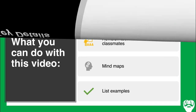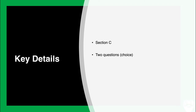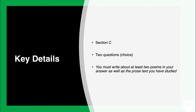Some key details you need to know before we begin. What I'm going to be talking about today relates principally to Section C of the Love Through the Ages examination paper. In this, you have a choice of two questions, and I'll be showing you the previous questions that the exam board have provided. The key requirement is that you must write about at least two poems in your answer, as well as the prose text you have studied. You need to be commenting on or analysing two poems — I wouldn't recommend doing more. It's better to have a more in-depth analysis of two poems than a broader, slimmed-down analysis of three. The prose text, for the purposes of this video, is The Great Gatsby by F. Scott Fitzgerald.